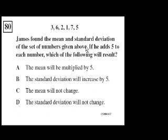James found the mean and standard deviation of the set of numbers given above. If he adds 5 to each number, which of the following result? All right, if you add 5, the mean will be multiplied by 5? No, no, no, that's not right. Because if you add 5 to each of these numbers, the mean will just become 5 bigger, right? You're kind of just shifting over the center to some degree. You're measuring the center by the average over 5.